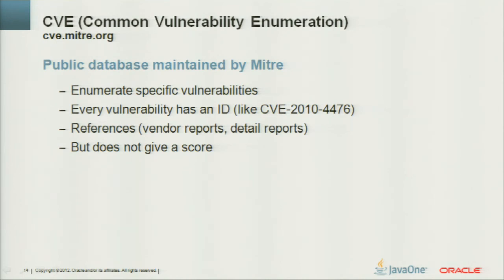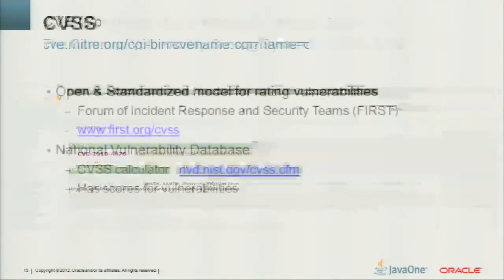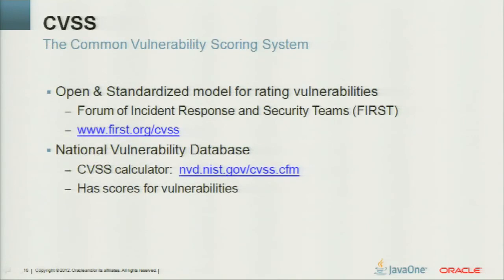CVE-2010-4476 was the double bug — a bug that could bring a Tomcat server to a halt. CVE itself has no scores; it only lists vulnerabilities. There's a standardized model for rating vulnerabilities by the FIRST organization that designed the CVSS standard, and the scores are listed in the NVD database with a CVSS calculator.